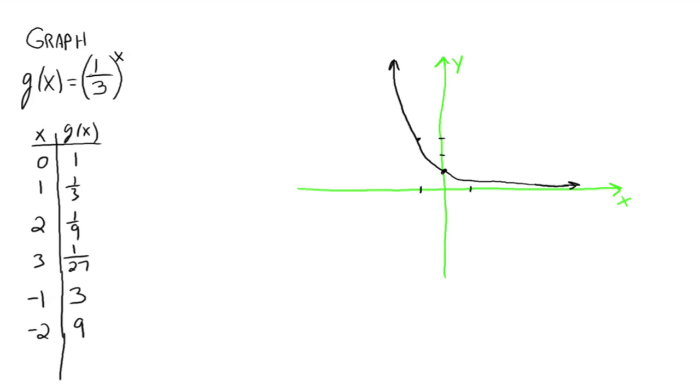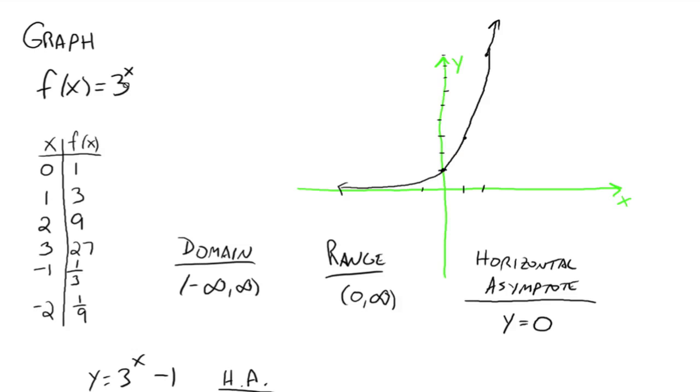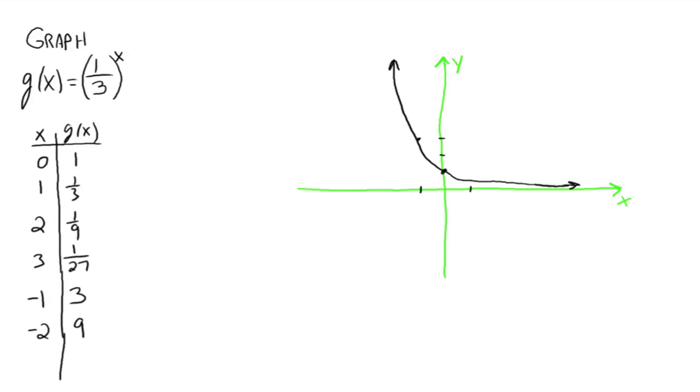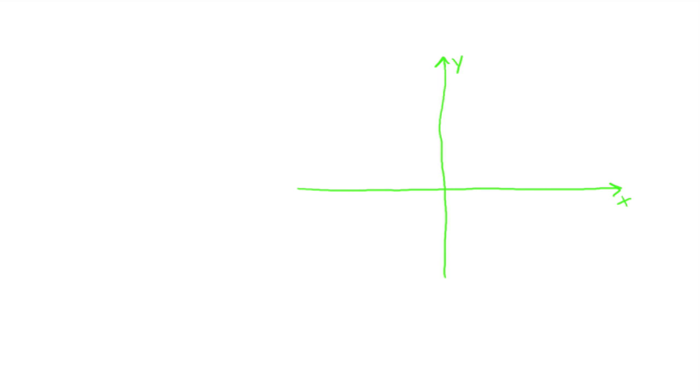Right? Okay. But your base here, 1 third, well obviously it's less than 1. Whereas over here, it was greater than 1. So notice what happens with your functions depending on your base size. And everybody agree?